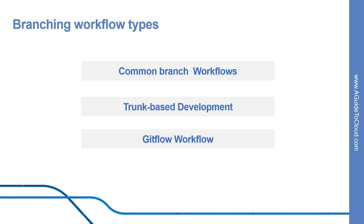The GitFlow workflow was first published in the highly regarded 2010 blog post by Vincent Driessen. GitFlow defines a strict branching model designed around the project release. This workflow doesn't add any new concepts or commands beyond what's required for the feature branch workflow. Instead, it assigns very specific roles to different branches and defines how and when they should interact. The forking workflow is fundamentally different than the other workflows discussed. Instead of using a single server-side repository as a central code base, it gives every developer their own server-side repository, meaning each contributor has two Git repositories: a private local one and a public server-side one.